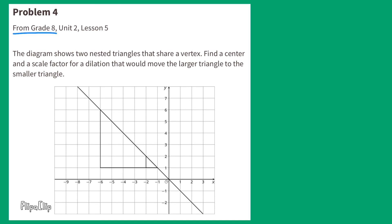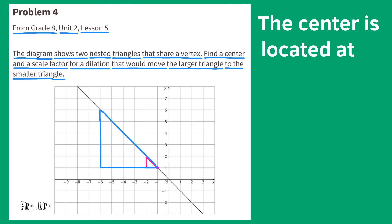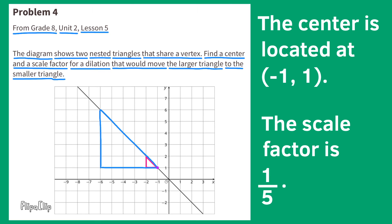Problem number 4. The diagram shows two nested triangles that share a vertex. Find a center and a scale factor for a dilation that would move from the large triangle to the smaller triangle. The smaller triangle is nested inside the larger triangle. A good center point looks like it would be at coordinates negative 1 and 1. With the dilation going from the larger triangle to the smaller triangle, the scale factor would be 1 fifth, because the smaller triangle is 5 times smaller than the larger triangle.